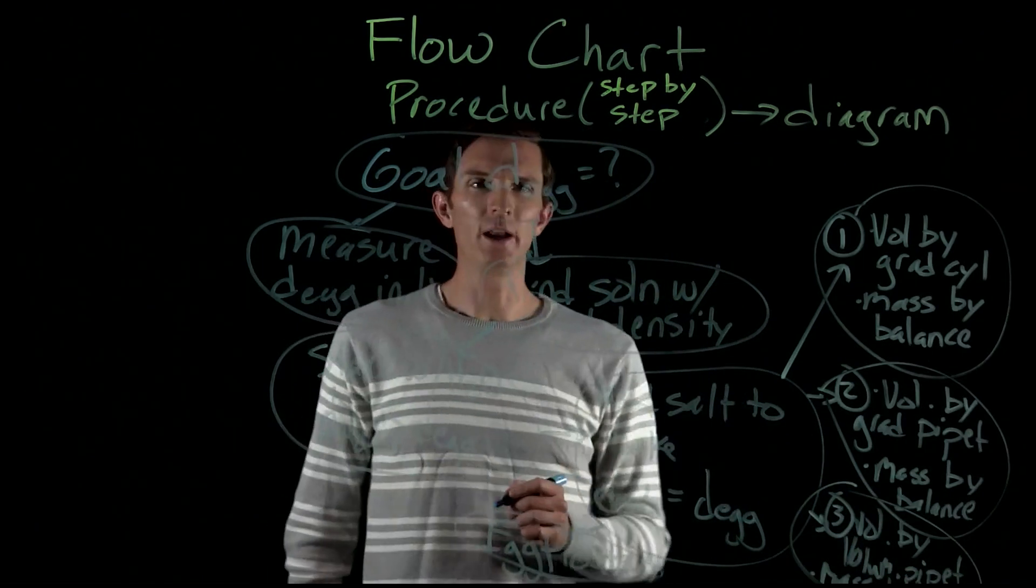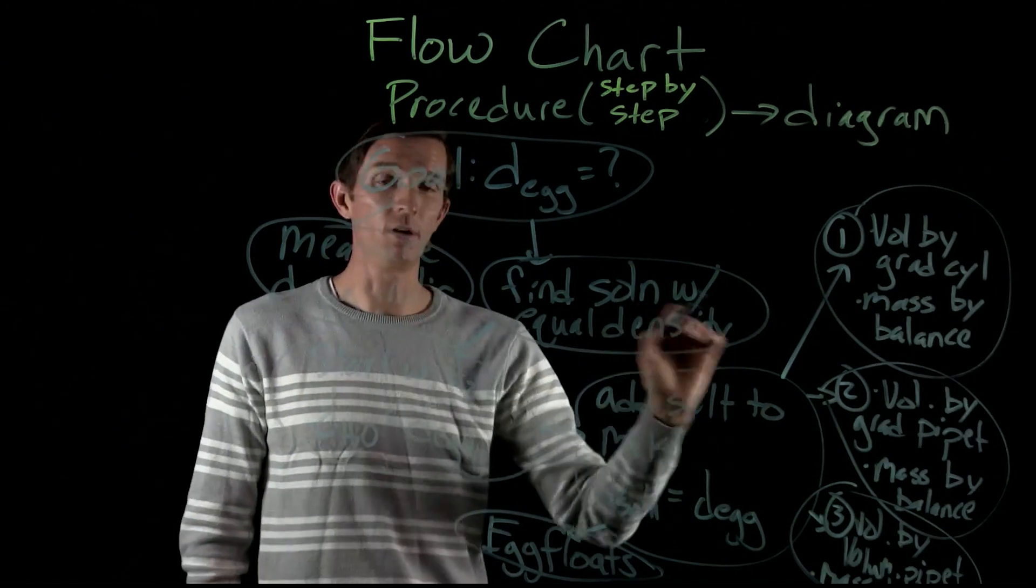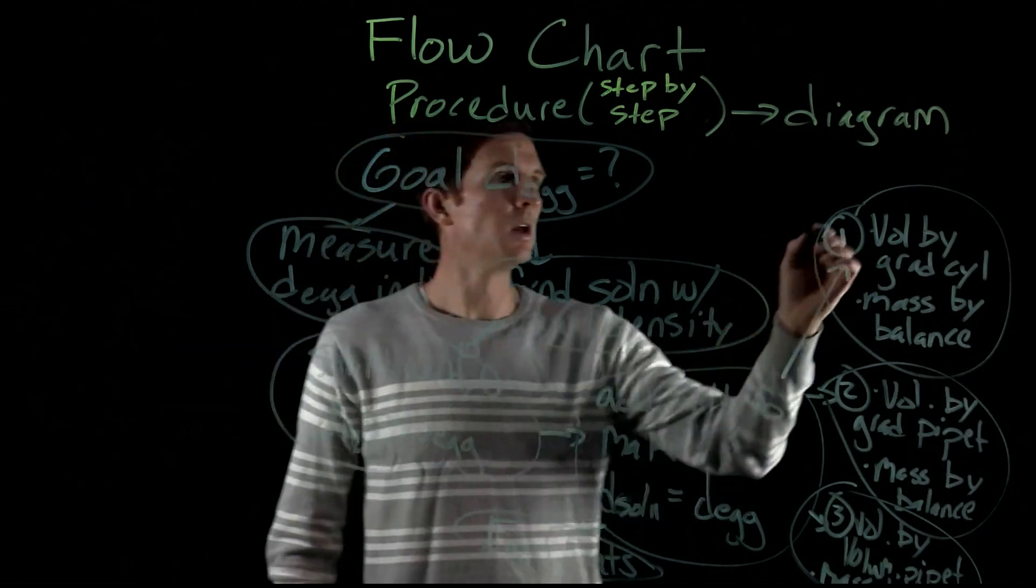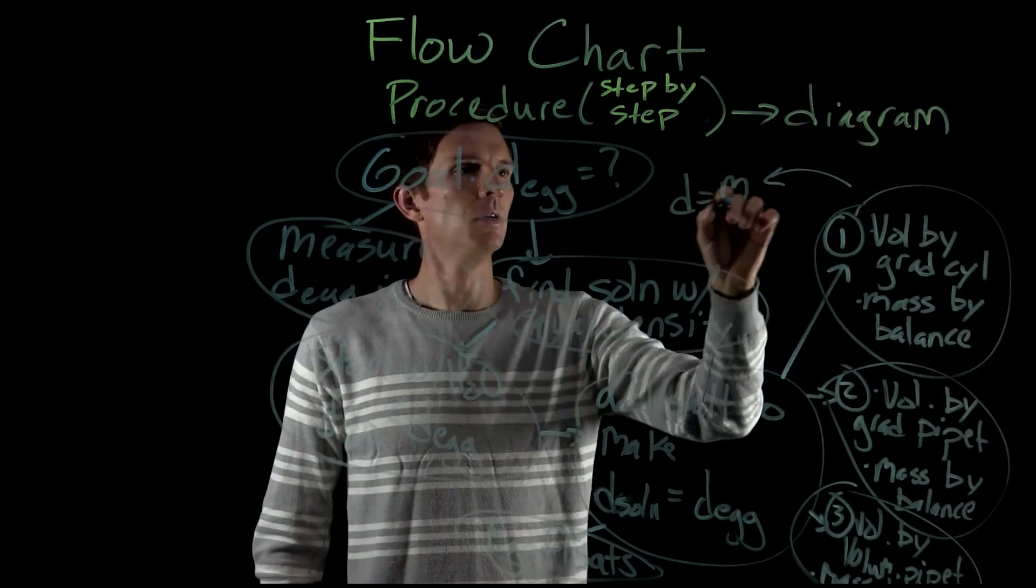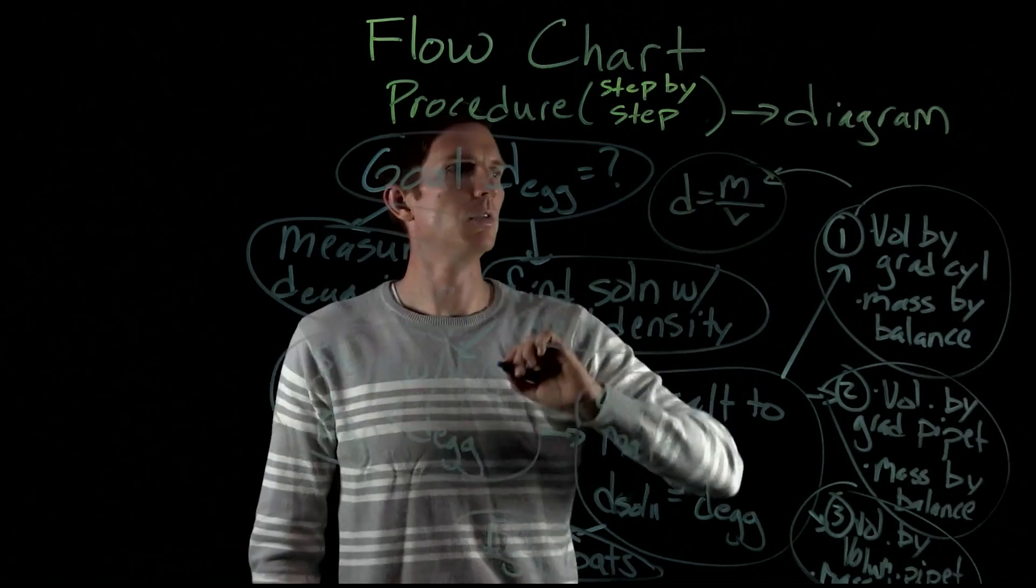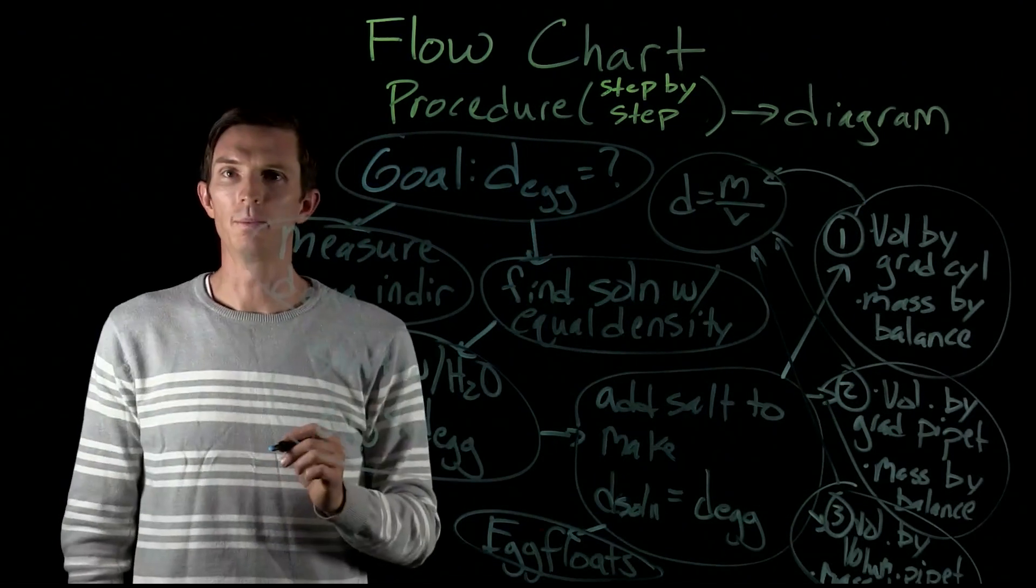Now that we've gone ahead and achieved and measured the volume and density, or volume and mass of each of these, then from each of those what we can do is we can find out the density by taking the ratio of the mass and our volume.